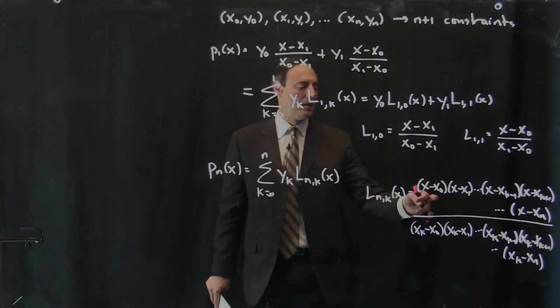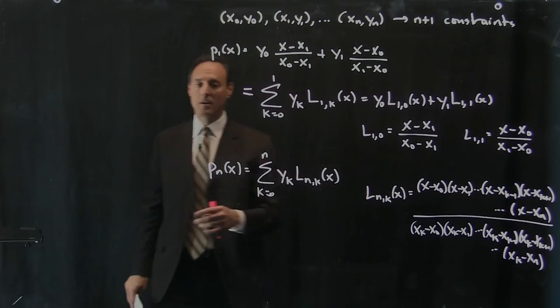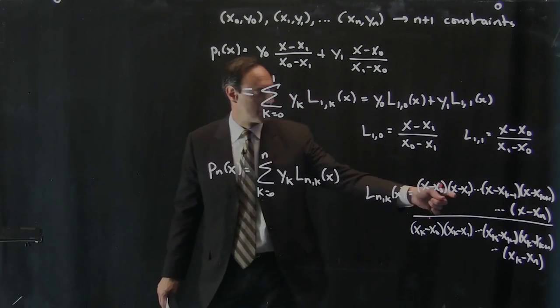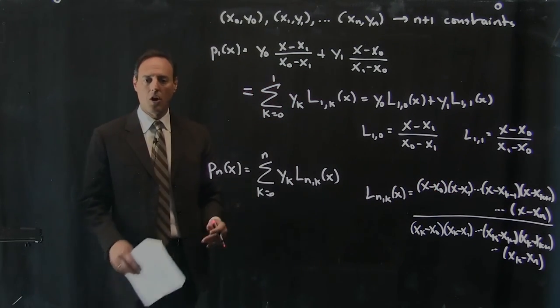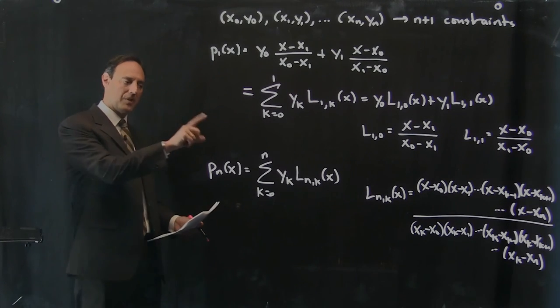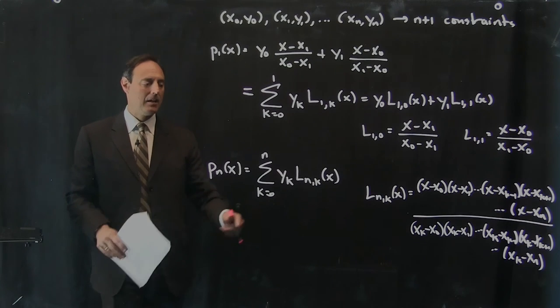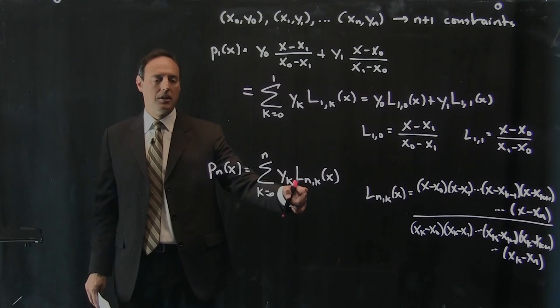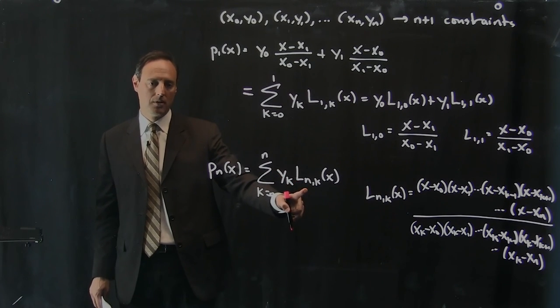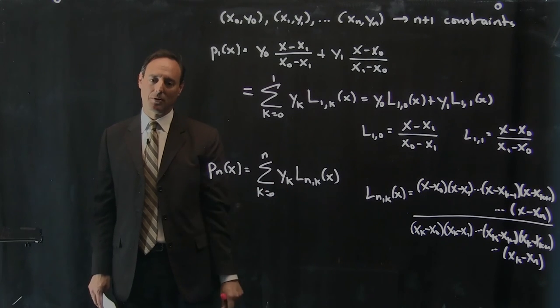If I put in x0 there, and I'm looking at the kth point, I get x0 minus x0, this is 0. If I put in the x1th point, I get x1 minus x1, that's 0. So all the terms are 0 except for that thing is 1 at the x of kth point. That's the way it's set up. So that's exactly what this thing does. This thing is either 0 or 1, depending upon which point you're looking at.